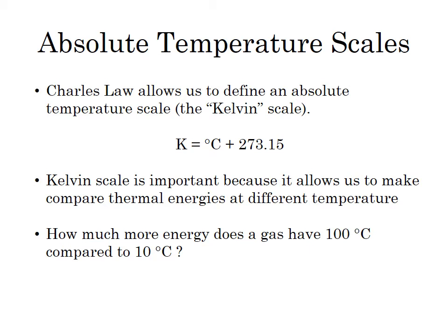Absolute zero is something that we typically measure on something called the Kelvin scale. And specifically, the way you measure temperature on a Kelvin scale is given with this formula. So I take the temperature in degrees Celsius and you add to it 273.15. Ultimately, the Kelvin scale is important because it allows us to compare thermal energies at different temperatures.